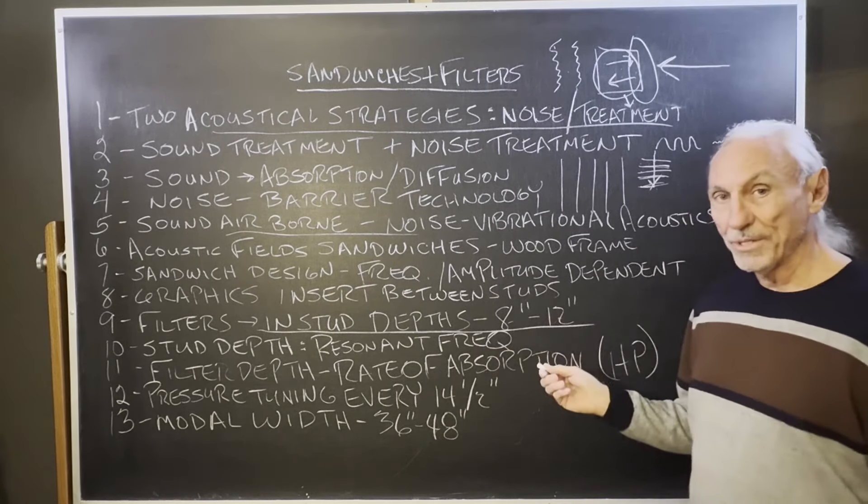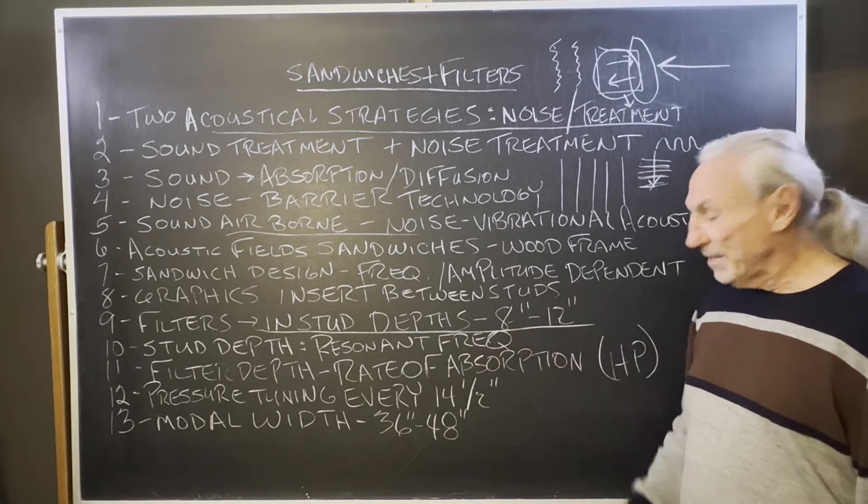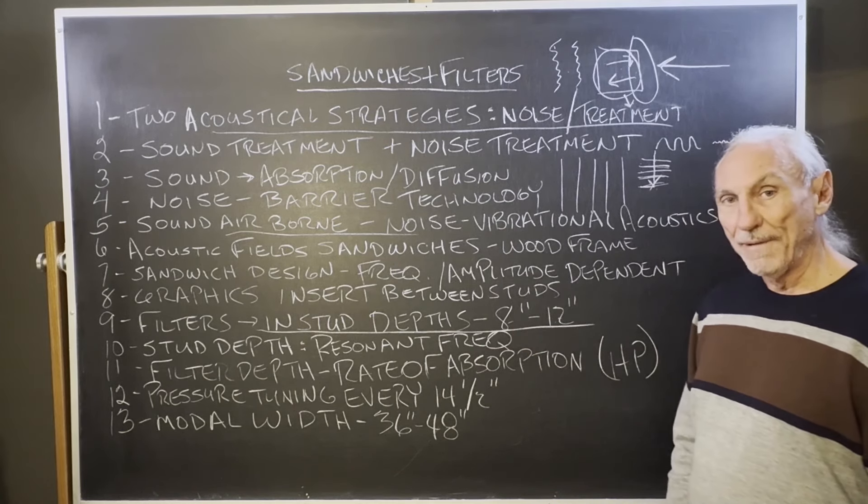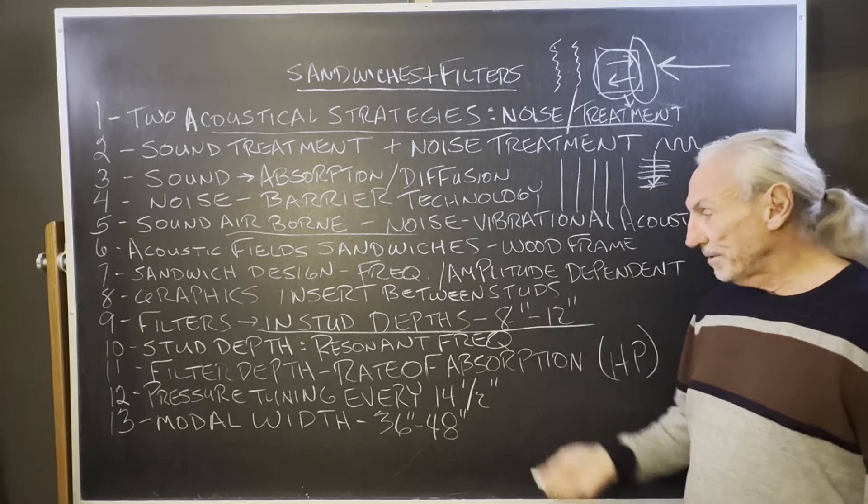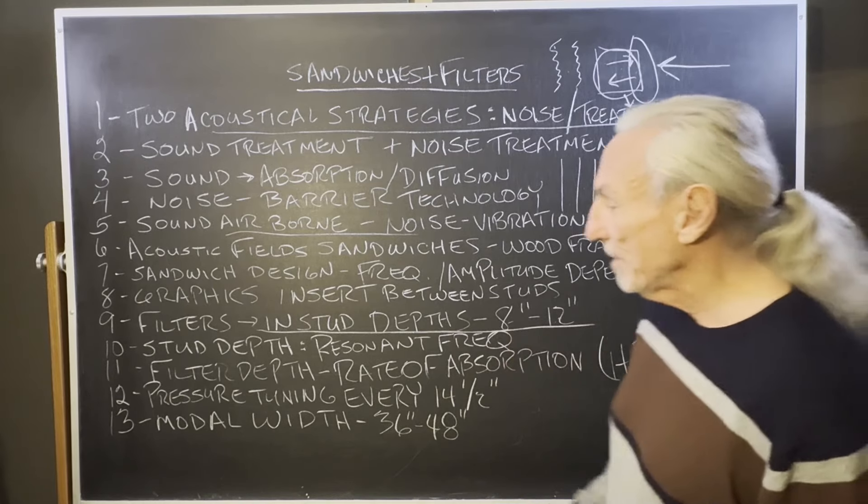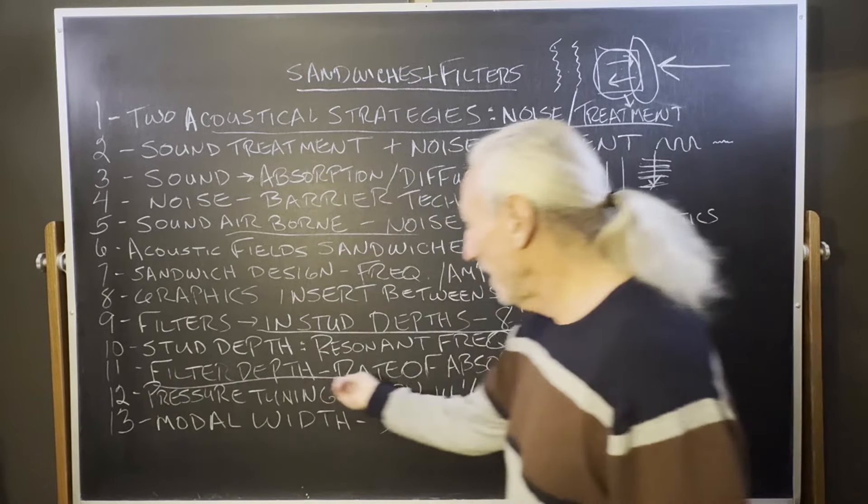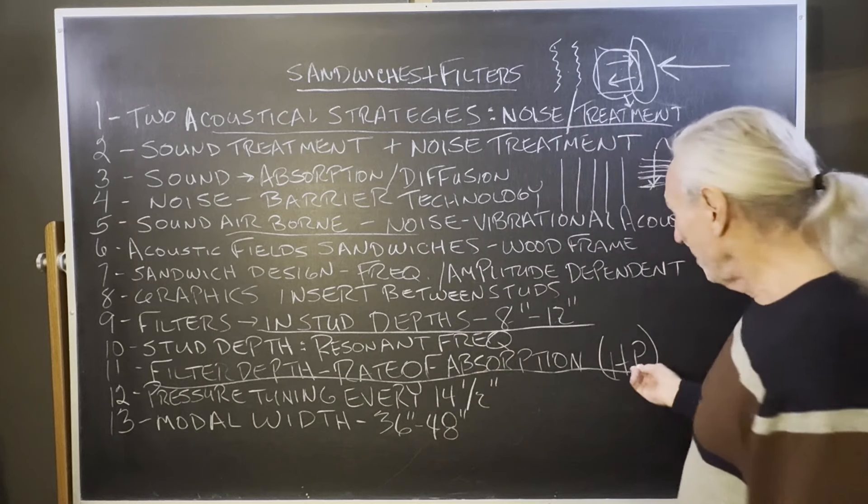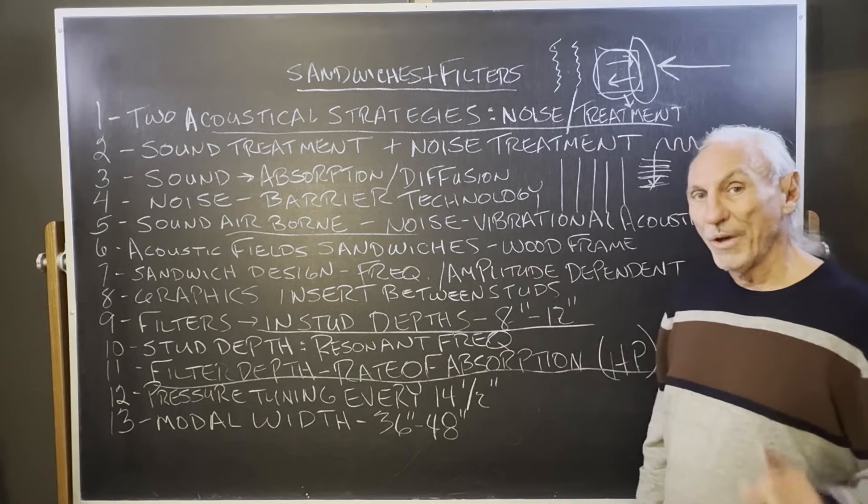Twelve inch, we can get down to 30 cycles. Eight inch, we'll probably get about 60. It's because of the difference in depth. So the depth determines the resonant frequency, but our carbon technology inside determines the rate of absorption or the horsepower. How much does it get?